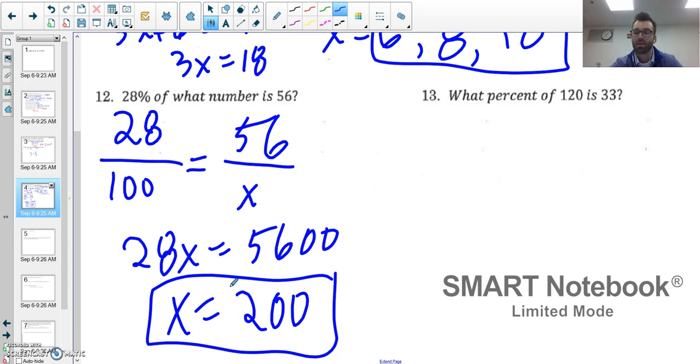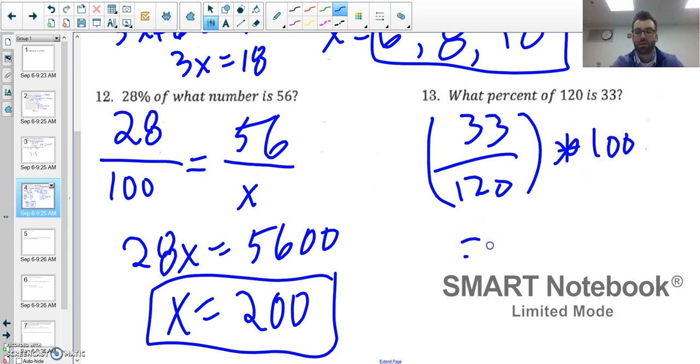What percent of 120 is 33? I could set it up similar to number 12 or I could just do 33 over 120 and multiply it by 100, and you get 27.5%.